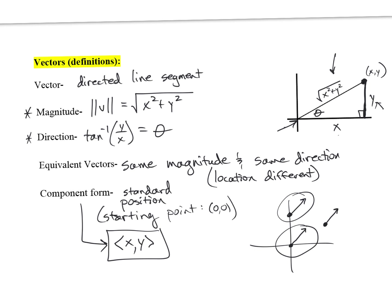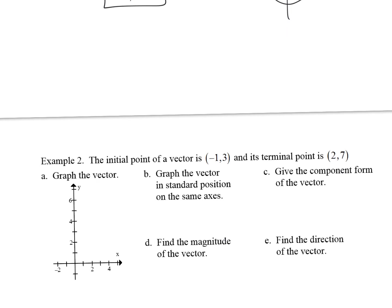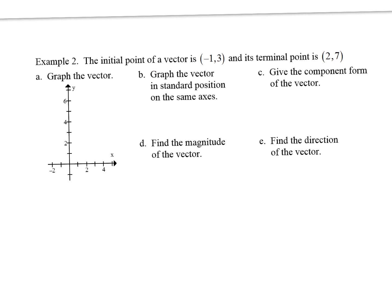You good with these definitions? Do they use the same notation in physics for magnitude? They do? Cool — so we're doing the same thing physics does. Let's go to example two. We're given that the initial point of a vector is (-1, 3) and its terminal point is (2, 7).